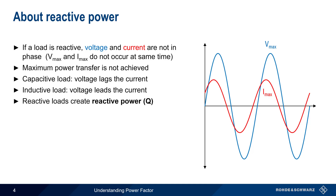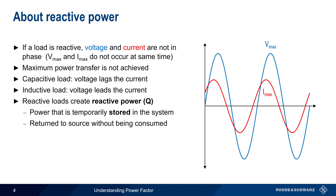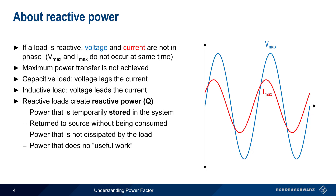Reactive loads create reactive power, abbreviated Q. There are many ways of describing reactive power. One way is as power that is temporarily stored in the system — that is, in the magnetic field of an inductor or in the electric field of a capacitor. When this stored energy is released, it's returned to the source without being consumed, and is therefore not dissipated by the load. Sometimes reactive power is described as power that does no useful work, but this is not entirely correct, and is something we'll discuss in more detail in just a moment. Unlike active power, which is measured in watts, reactive power is measured in units of volt-amperes reactive, and it's common to hear reactive power referred to as VARs or KVARs.